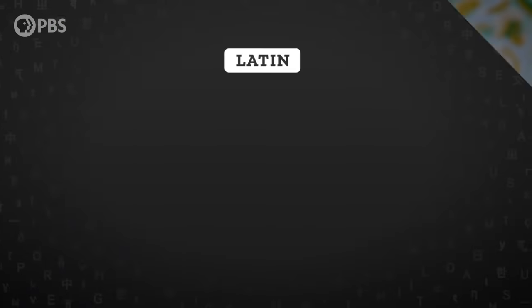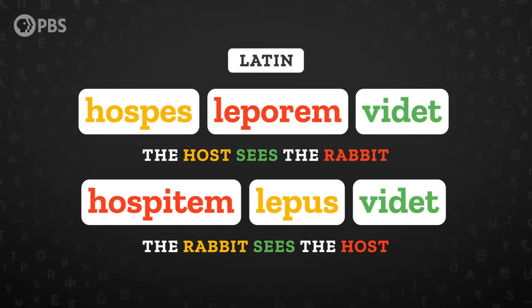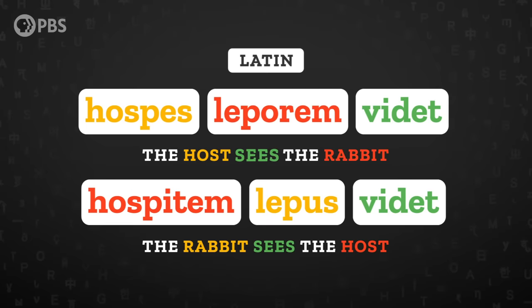That morpheme would indicate whether the thing being referred to is the do-er or the do-ee — the subject or the object. Even if we scramble the order of the words around, we'd still be able to tell the subject and object apart. For example, in Latin, these two sentences have the same word order but opposite meanings, and we can tell this because the words change their shape a bit. 'Hospes leporem videt' is 'the host sees the rabbit,' while 'hospitem lepus videt' means 'the rabbit sees the host.' Because of these morphemes, Latin can use word order for other things, like emphasis or making a poem rhyme better.